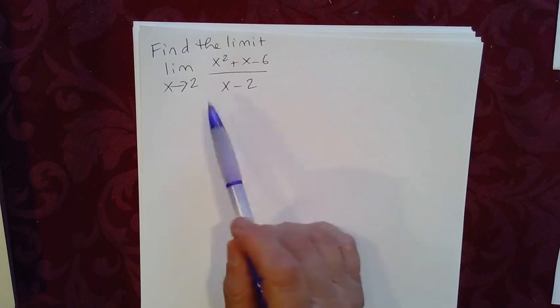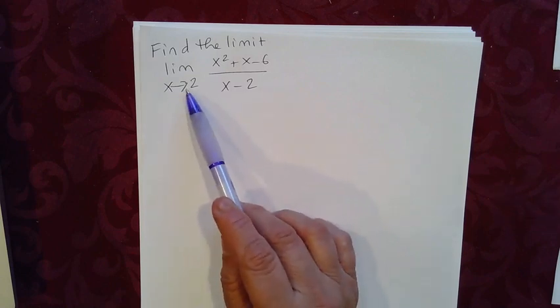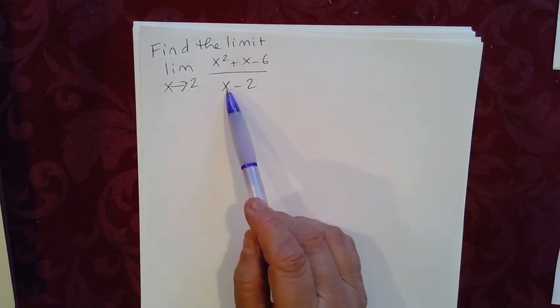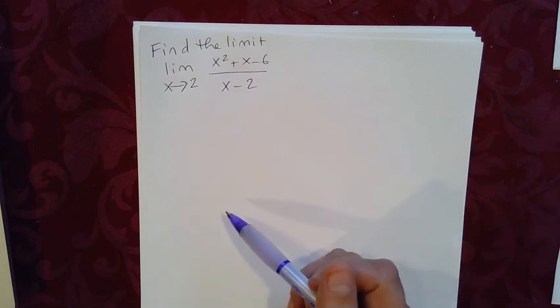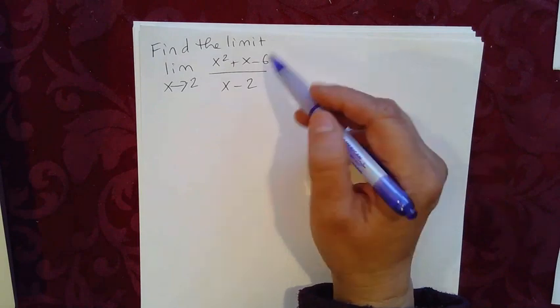Now we cannot use direct substitution because if we plug in 2 for x, we're going to get 2 minus 2, which is 0 in the denominator. So we cannot do that.